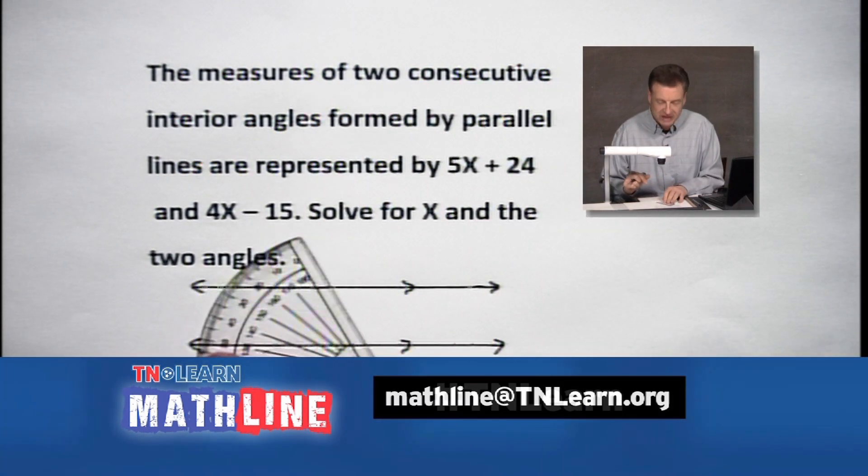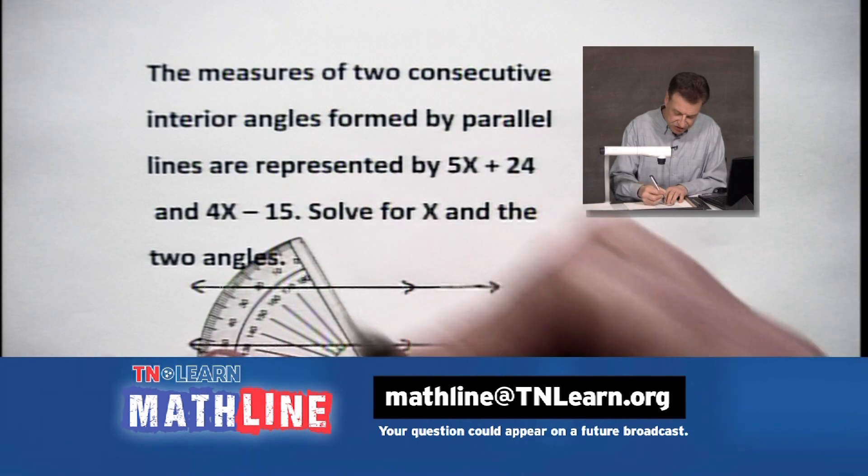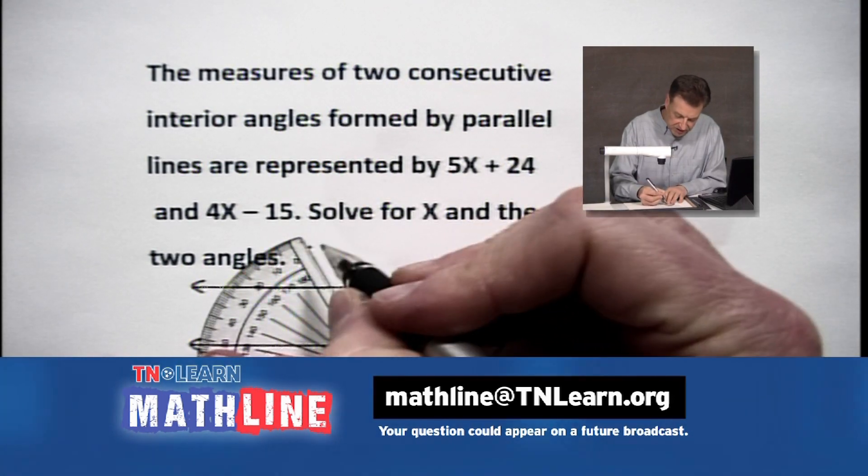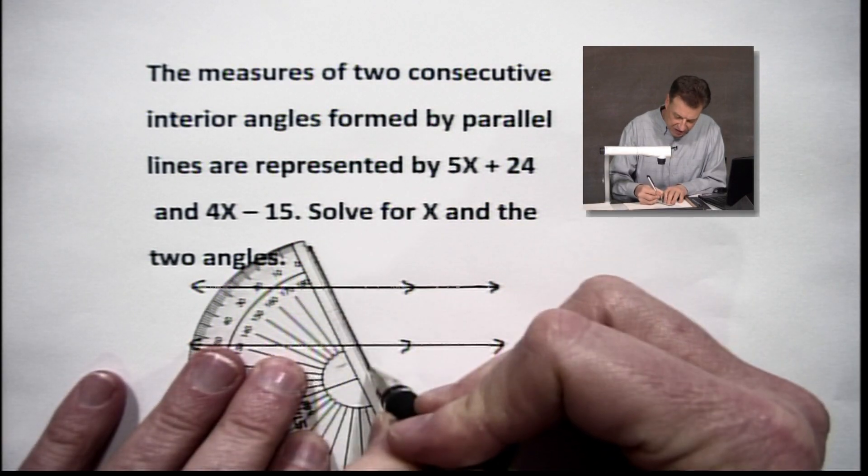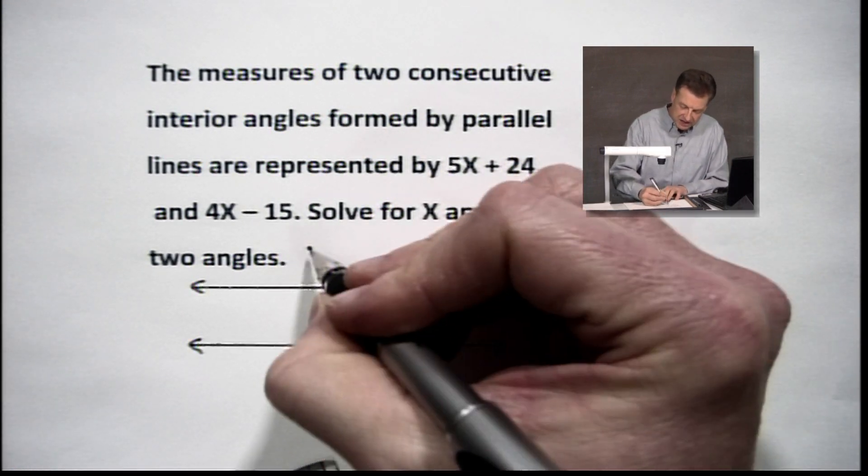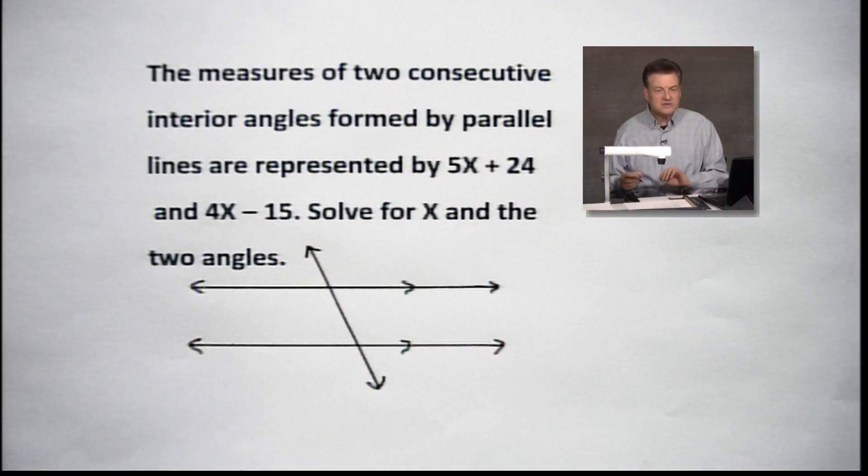Although it did say in the problem we are going to be dealing with that. Now we've got to have a transversal to make any angles form. Obviously these lines do not intersect. So let's pull in some transversal action. I really don't know how wide that's supposed to be because we don't know what x and the angles are yet. So there's your drawing.